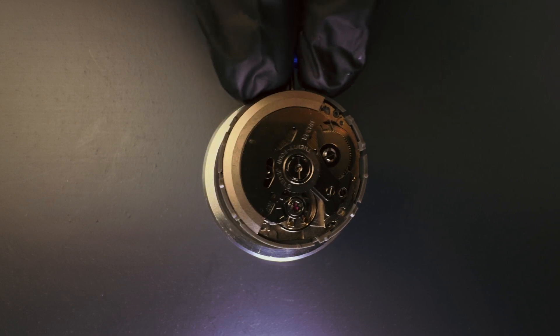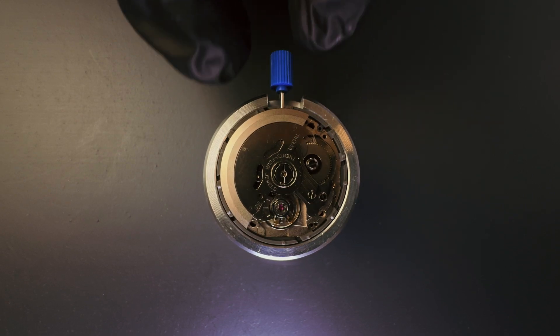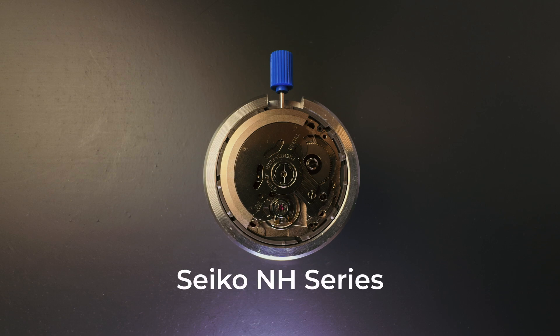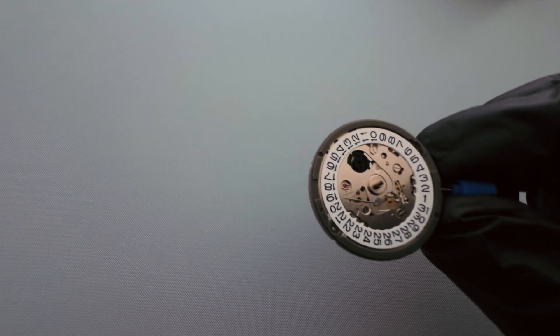First, the movement. It's the heart of your watch. The most budget-friendly choice is the Seiko NH series. They're affordable, reliable, and super versatile. Perfect for modding and DIY builds. Here are some popular options.